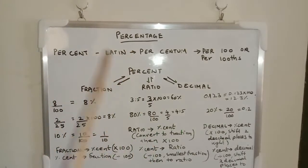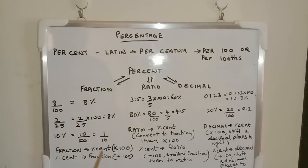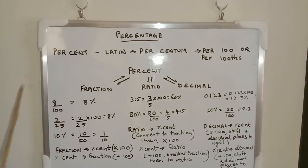Percent can also form into three types: fraction, ratio, and decimal. For fraction to percentage, 8/100 equals 8%. That is, you have to multiply the fraction by 100. So there will be 8/100 × 100. You can cancel the hundreds, and you will get 8%.